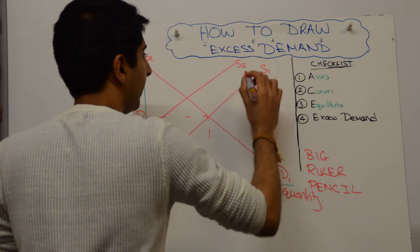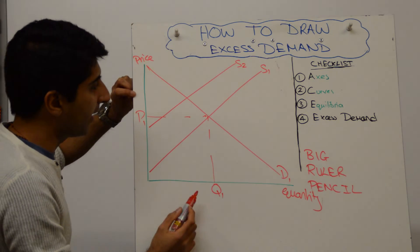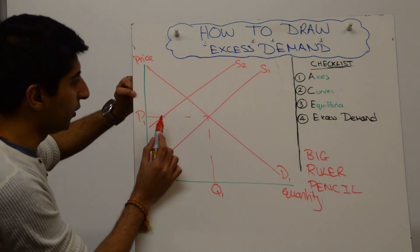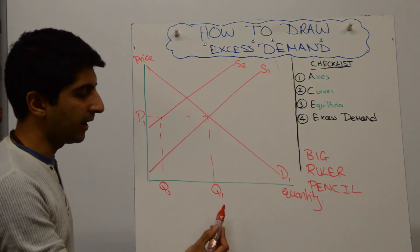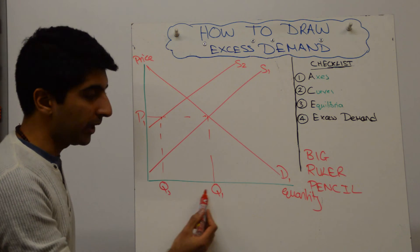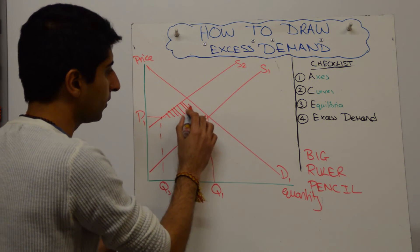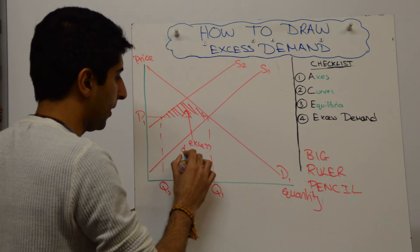Now shift supply to the left, from S1 to S2, for whatever reason. What do we have? Well, at the same price, where is supply? Well, new supply is over here. You might want to call that QS, and demand remains at Q1. So what we have here is an excess demand. If you want to shade in the triangle, shade it in and label that excess demand.